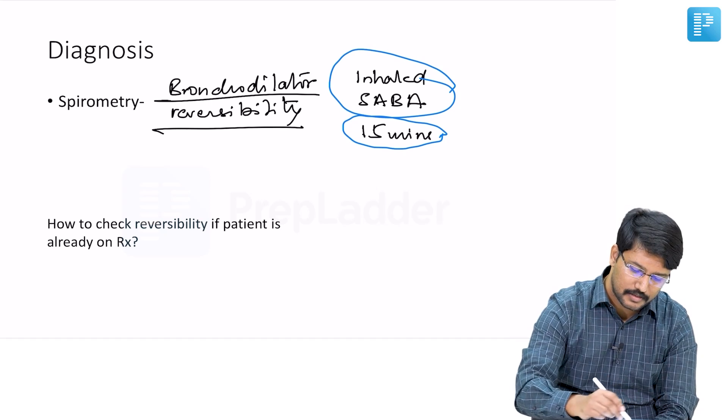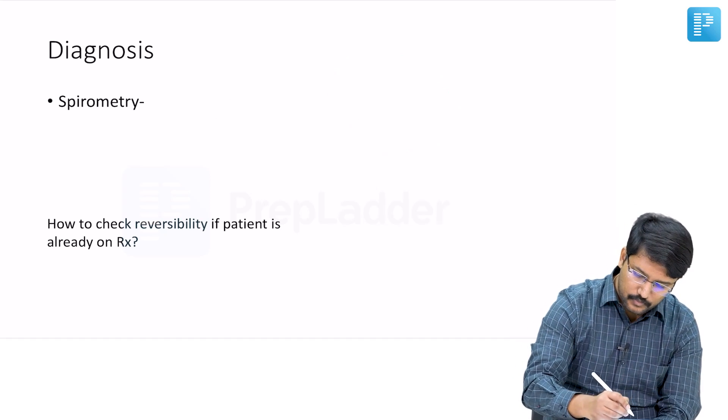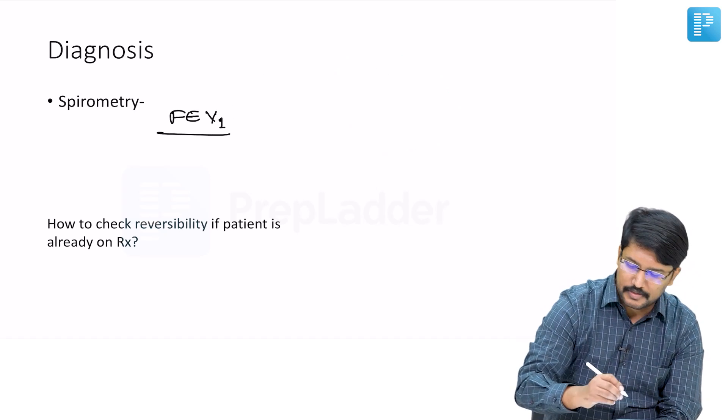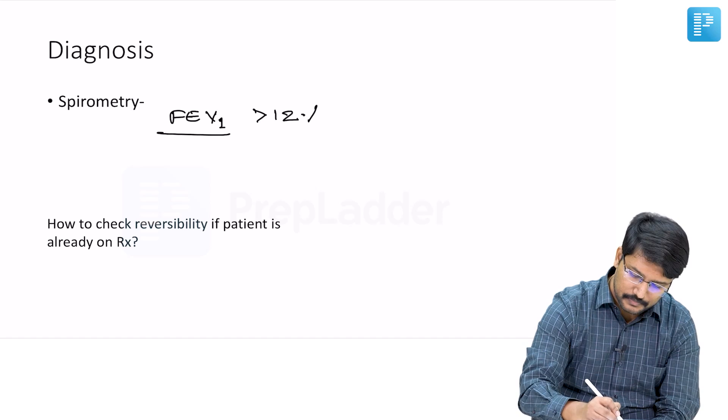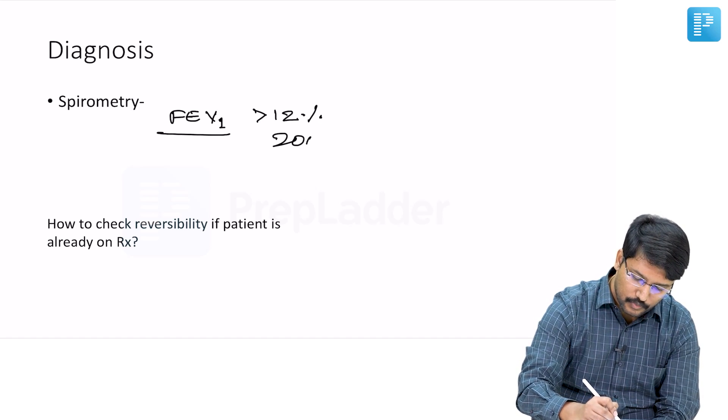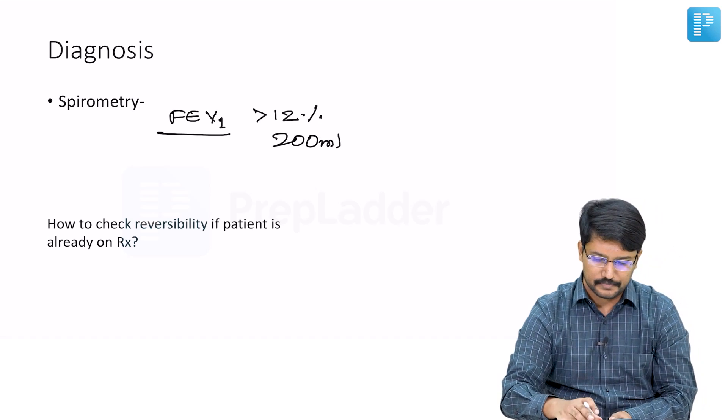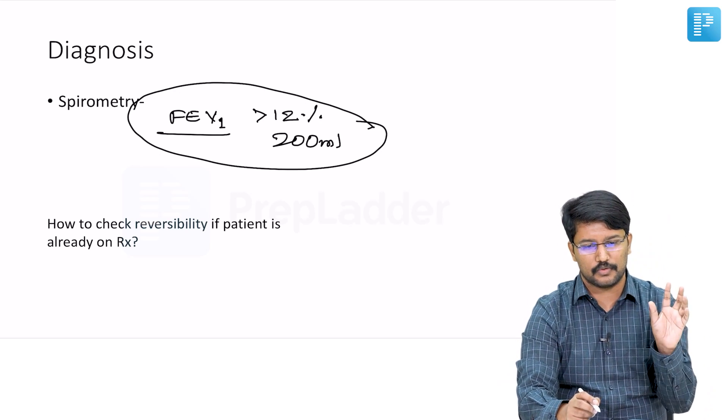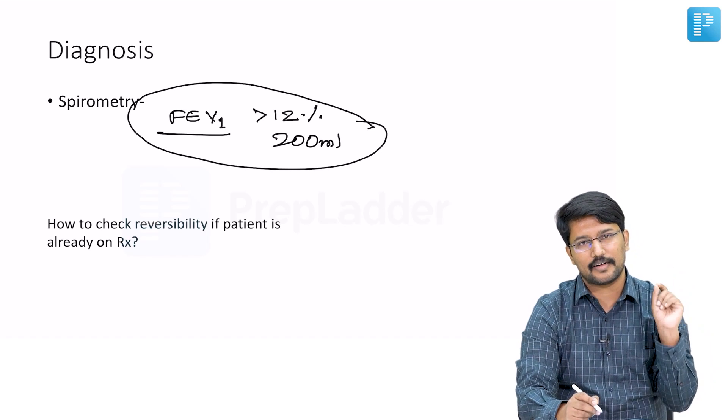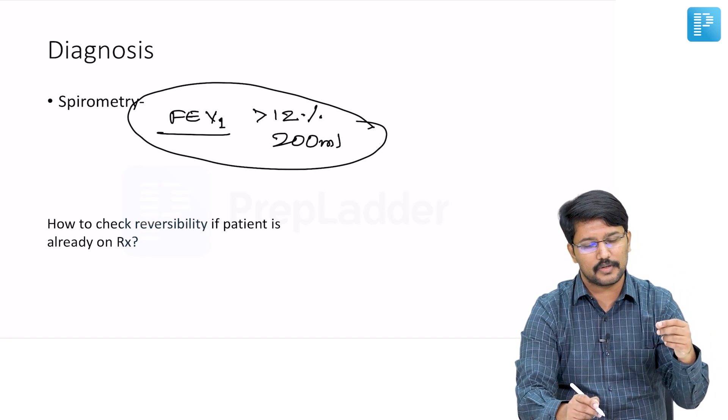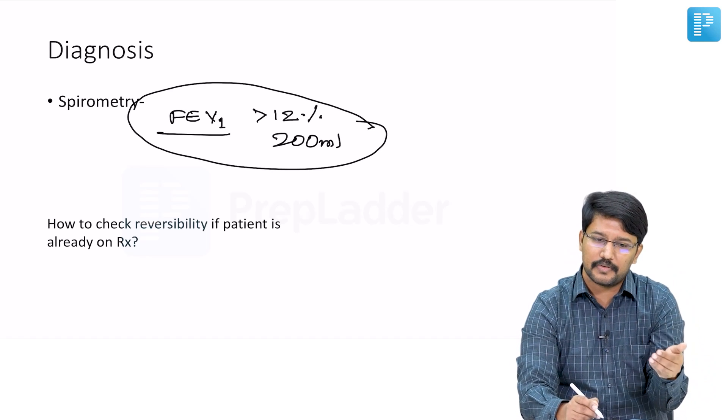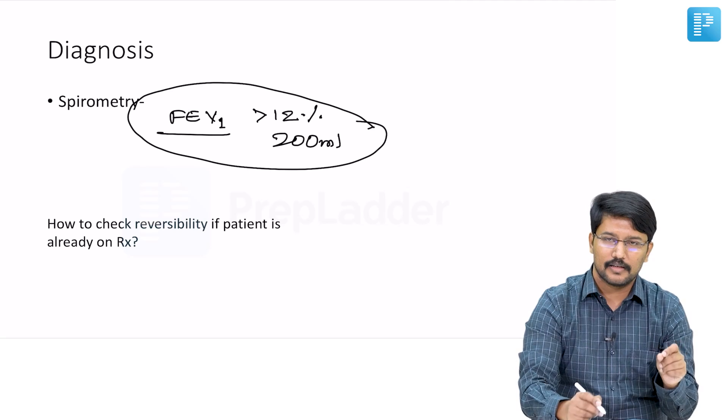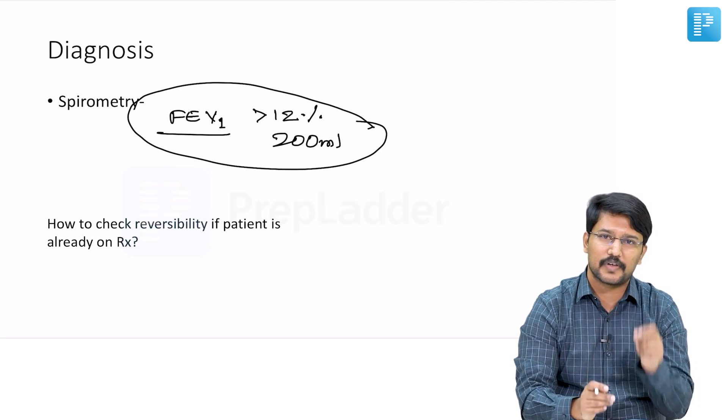We should be able to demonstrate that their FEV1 increases by more than 12% or by more than 200 ml. 12 and 200 are the numbers. If you are able to demonstrate that after giving short-acting beta agonists, 15 minutes later their FEV1 has increased by 12% or more than 200 ml, then bronchodilator reversibility is present.